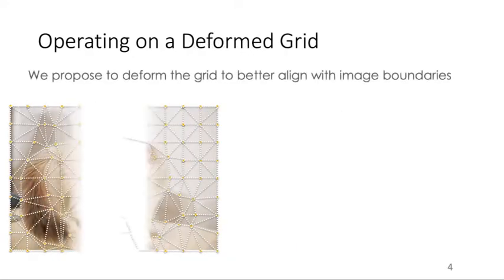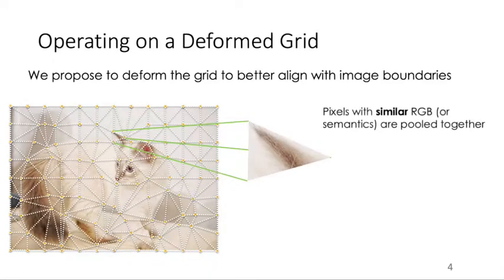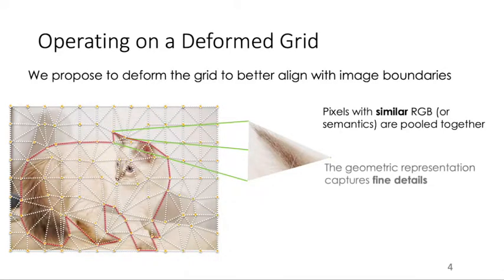However, if we are operating on a deformed grid whose edges align with image boundaries, pixels with similar RGB colors or semantics can be processed together. And since the grid edge is aligned with image boundaries, the geometric representation thus captures fine details in an image.